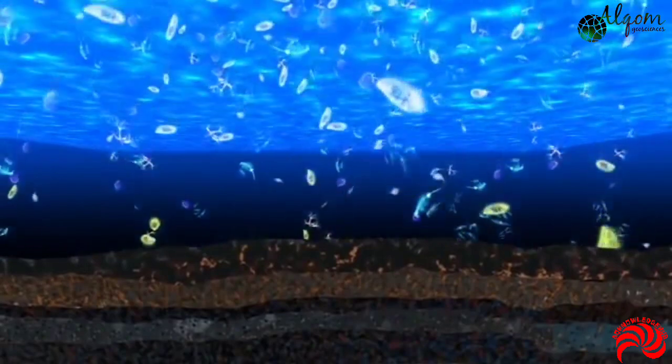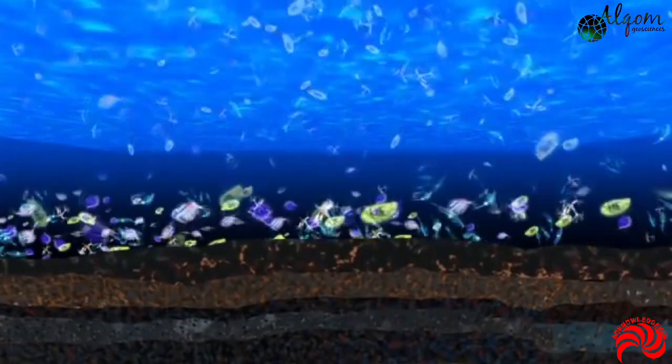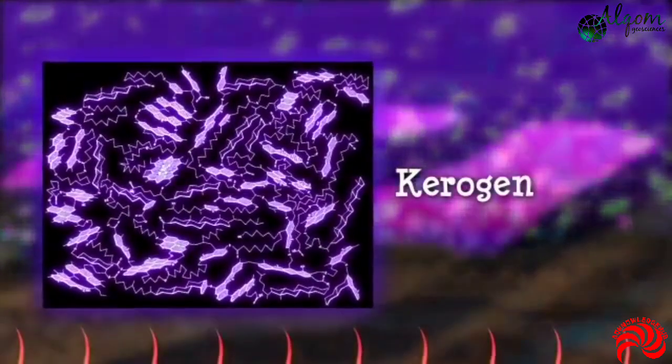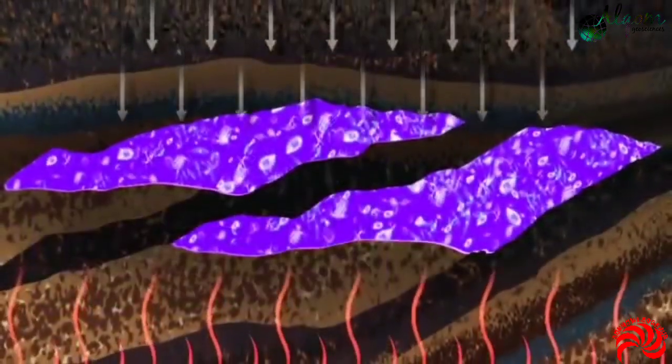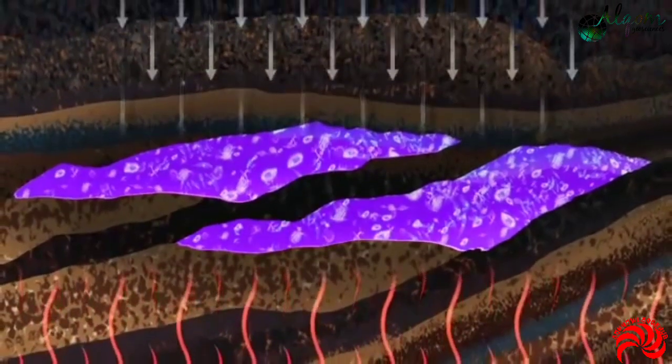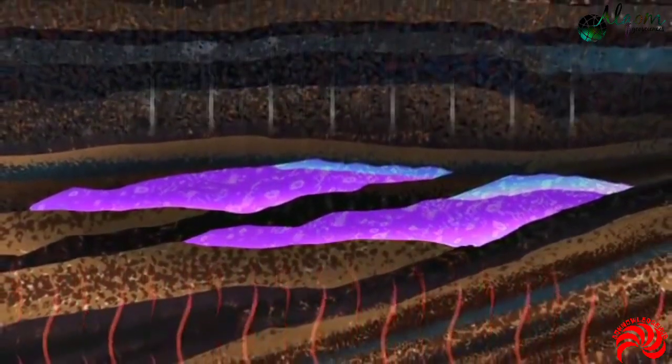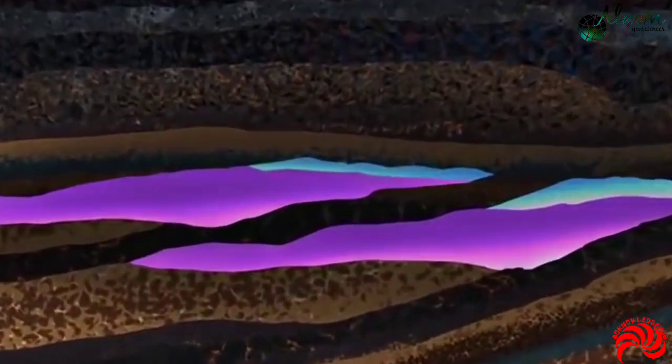Beneath other sediments in the ocean and in the absence of oxygen, these fossils changed into a substance called kerogen. Under heat and pressure, kerogen gradually changes into oil or gas. The whole process usually takes at least a million years.